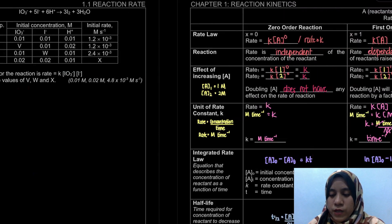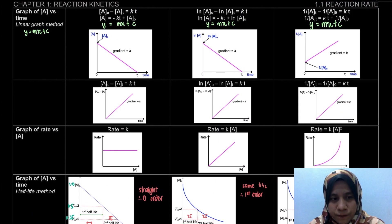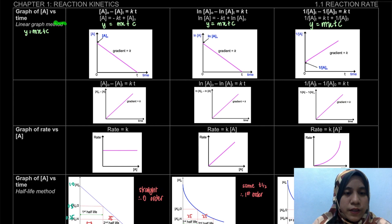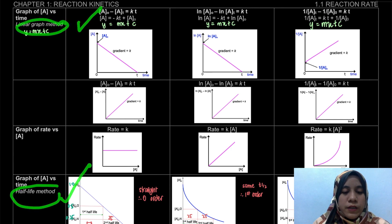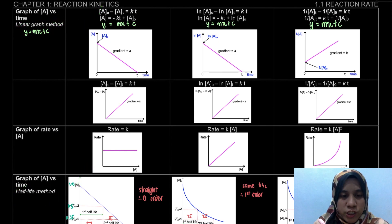On your notes, let's look at page 8. We have the first graph and the second graph — the linear graph method as well as the half-life method. These two are also ways to determine the order of the reaction.